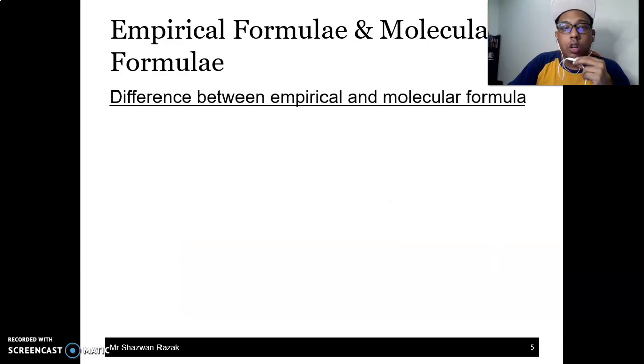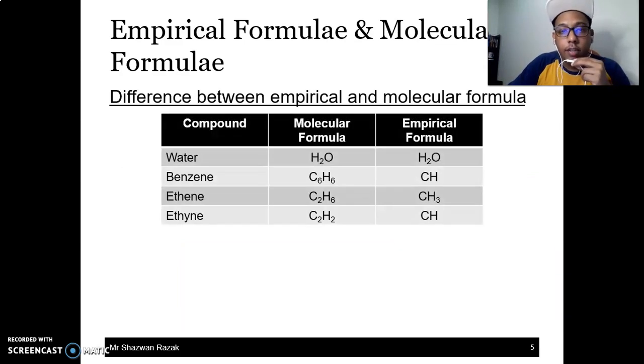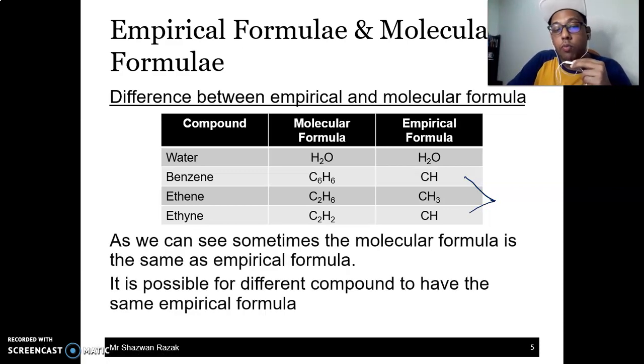So there is some differences between empirical and molecular formula. Ada compound yang mempunyai empirical and molecular formula yang sama. Contoh H2O, kalau kita divide macam mana sekali pun, dia still dapat empirical formula pun H2O. Kalau benzene, C6H6, dia bahagi dengan common denominator dia, n, kita akan dapat CH. Ethyne CH3, ethyne CH juga. Kalau kita tengok sini, empirical formula dia boleh sama, tapi dia bukan represent the same compound. It can represent different compound. So we can have similar empirical formula for certain element and certain compound, but it's not the clear representation of the compound.